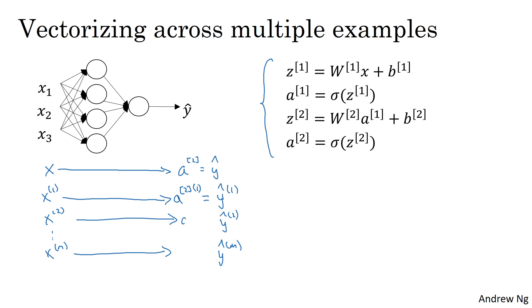And this is a2, 2, and a2, m. So this notation, a square bracket 2, round bracket i...